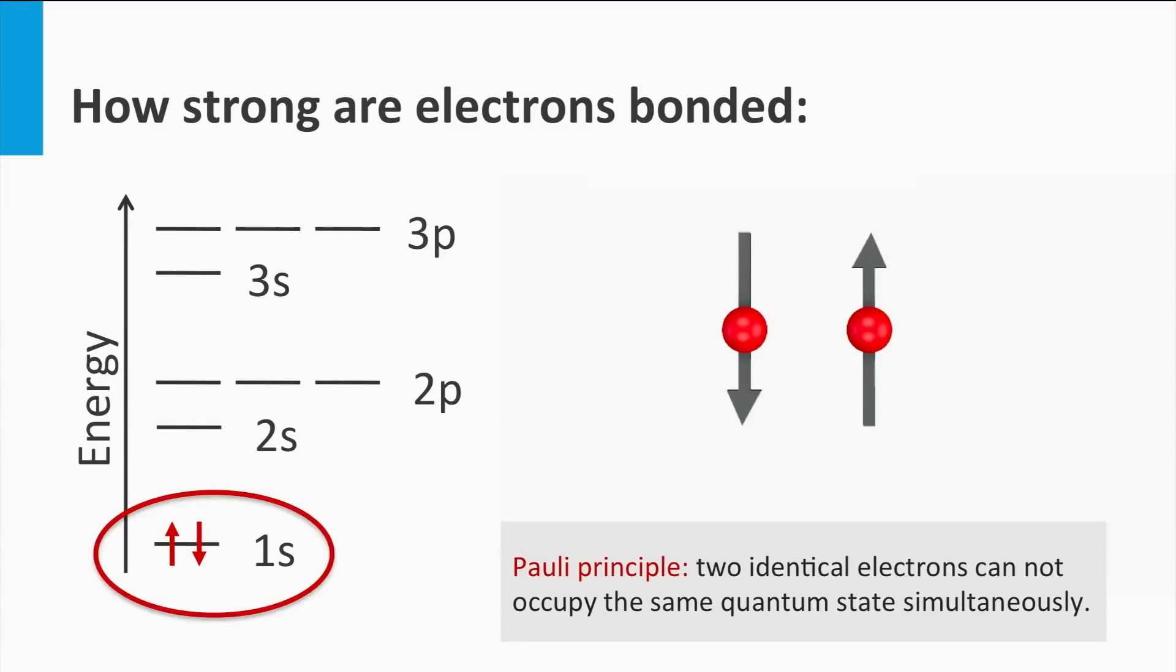Basically, Pauli's exclusion principle allows every electron energy level to be filled by at maximum two electrons. Using this knowledge, let's consider the next element in the periodic system, the helium atom.